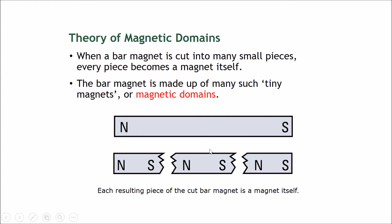Let's take a look at the theory of magnetic domains. When a bar magnet is cut into many small pieces, every piece is found to become also a magnet. For example, if you have a long bar magnet and you smashed it into three pieces, each of these three would also become magnets. This is because a bar magnet is not one giant piece of magnet — magnetism is actually made out of many tiny magnets, or magnetic domains.